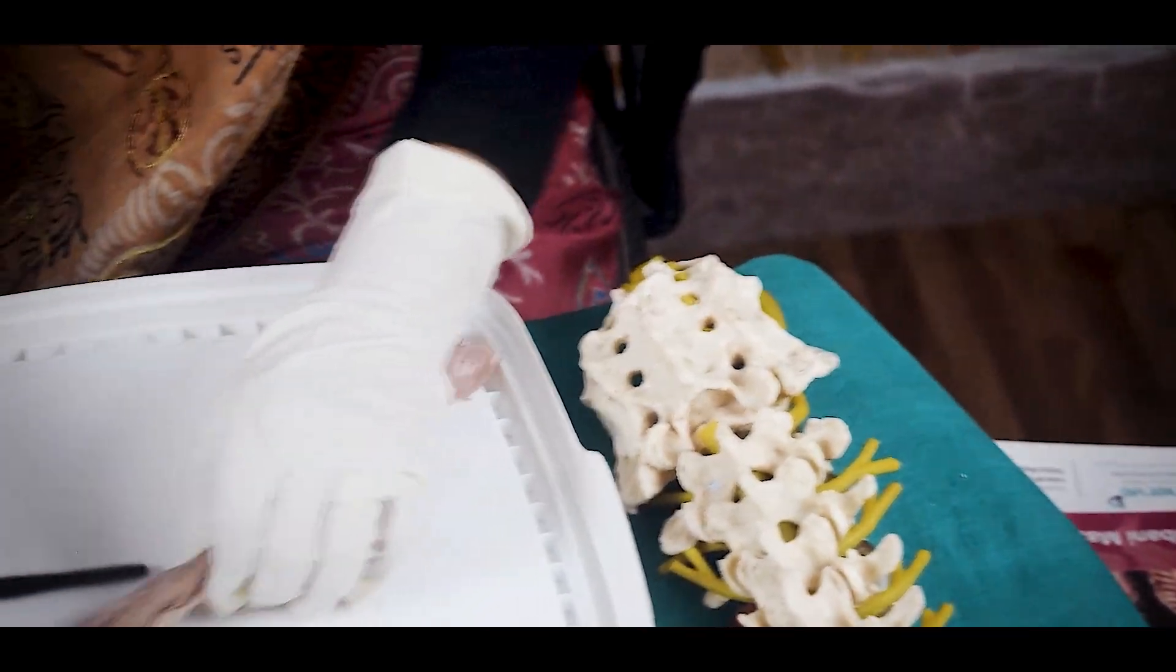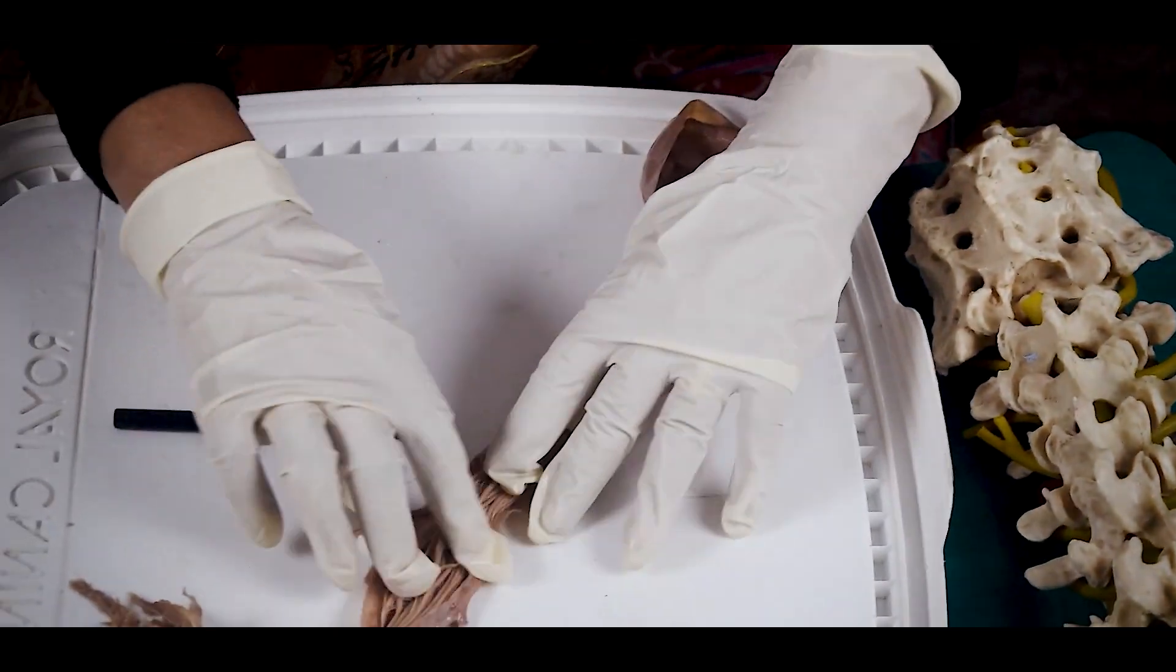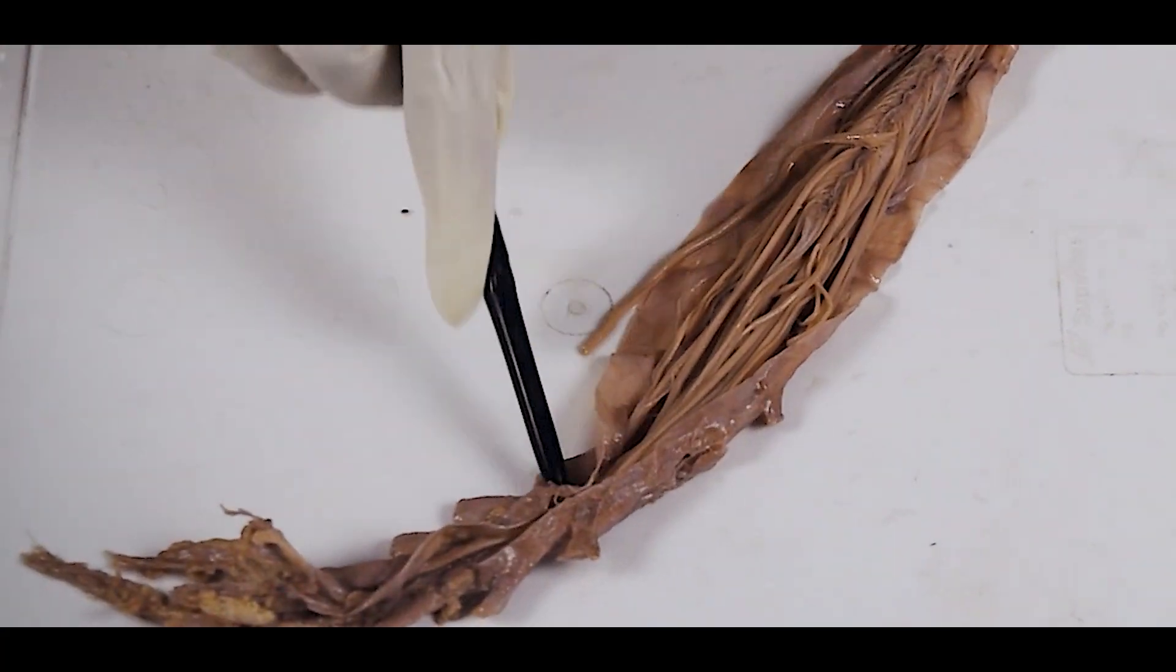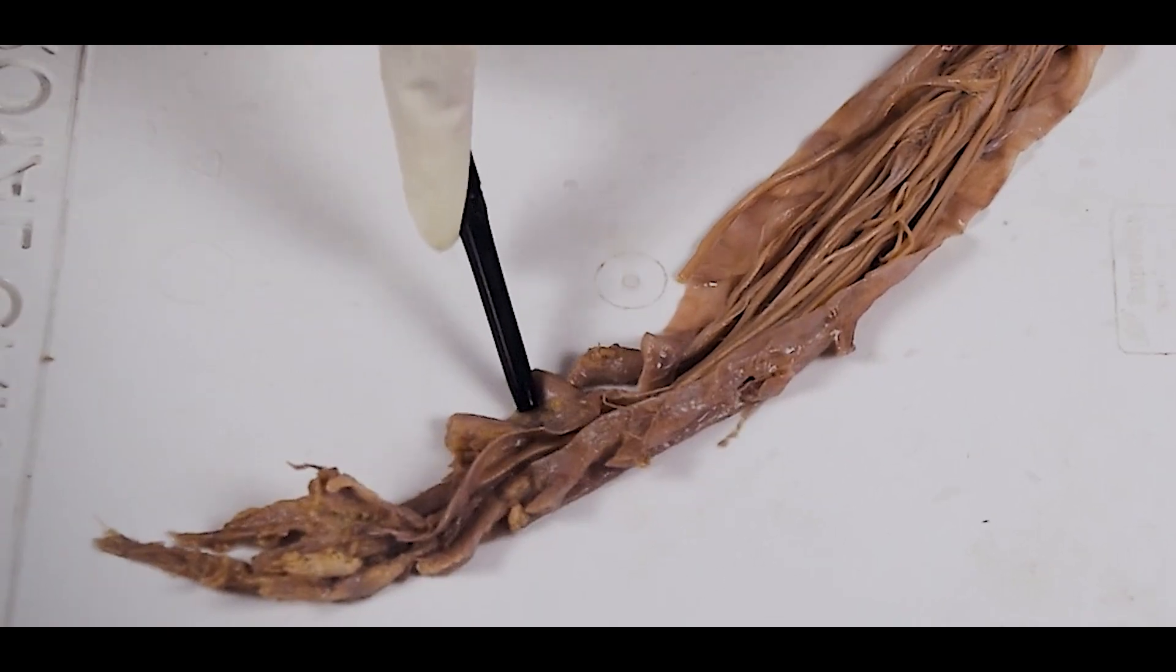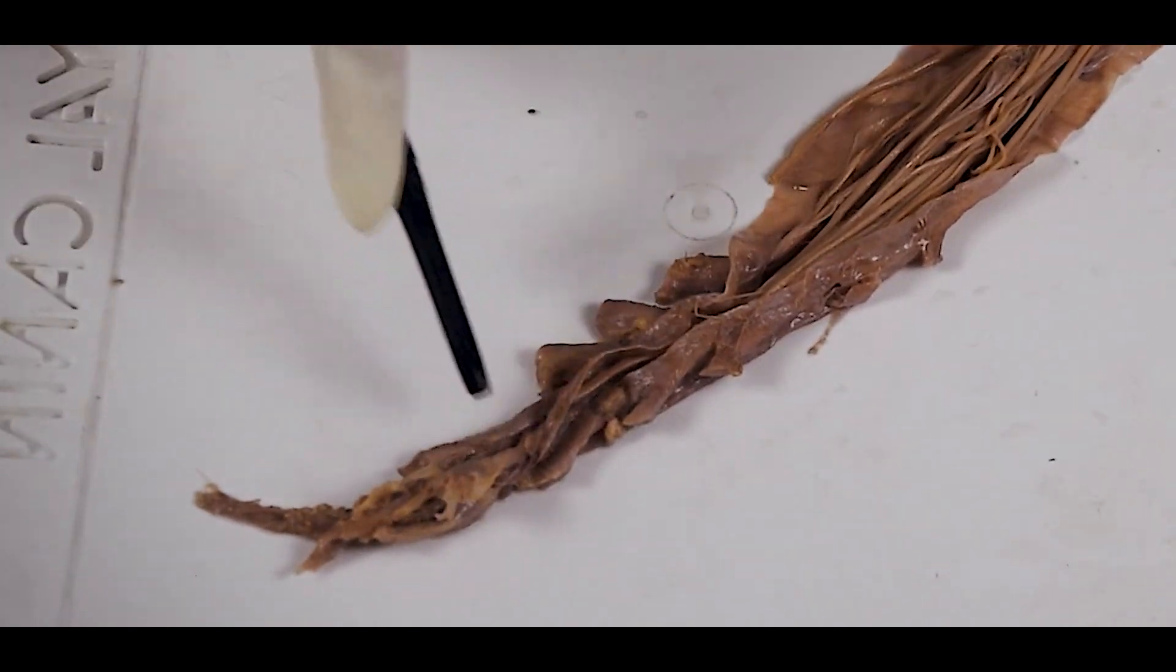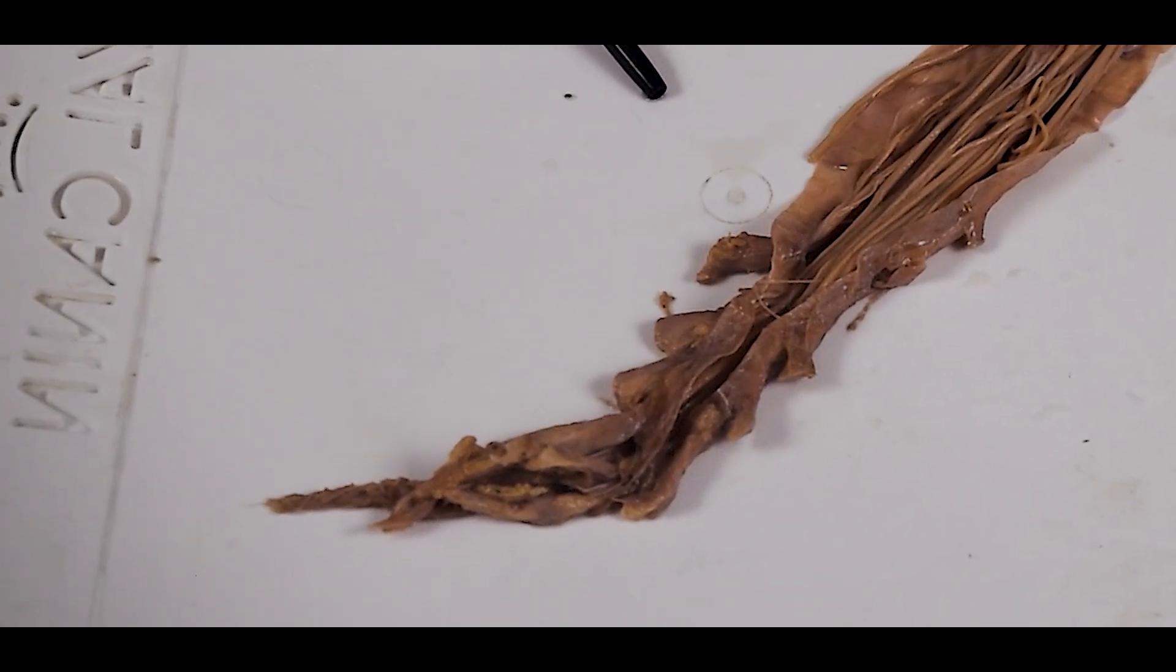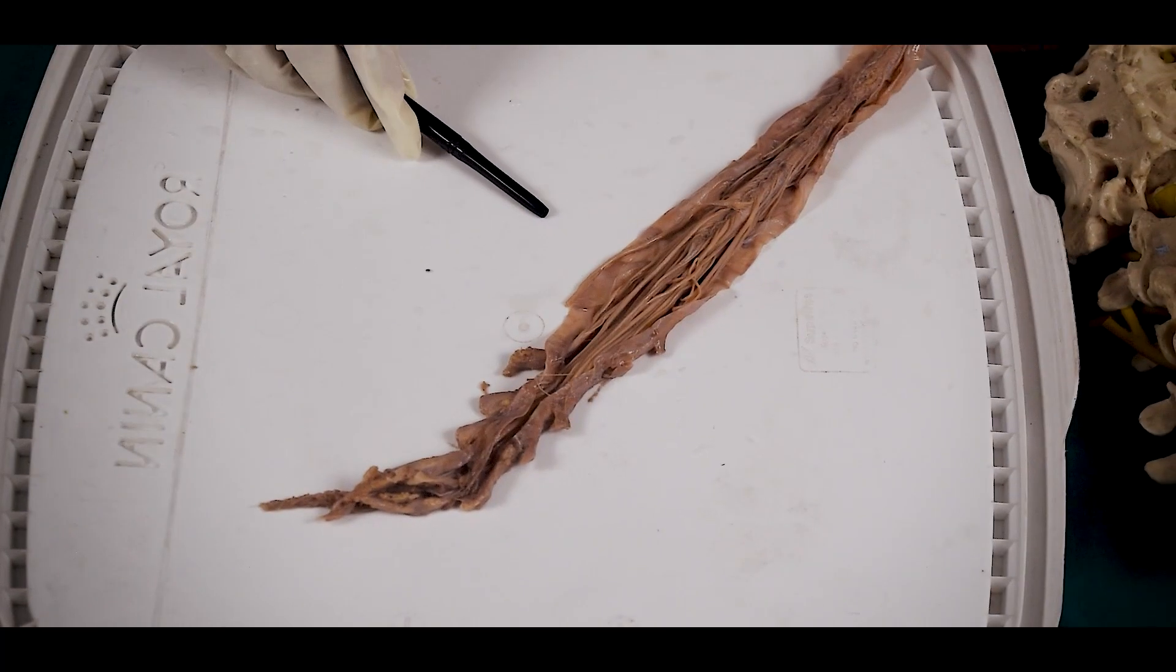And you will see, this is the real look of the cauda equina. And these nerves are coming out as the sacral nerve. You will see how big it is and ultimately it will form the filum terminale.